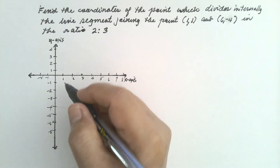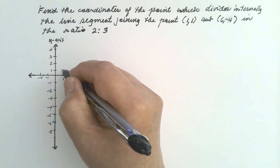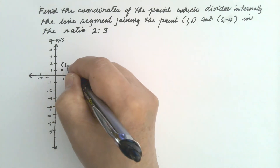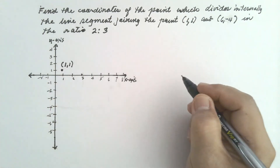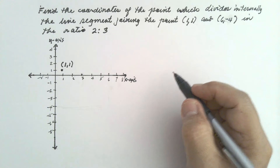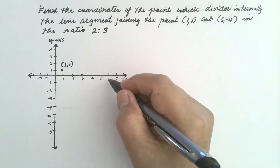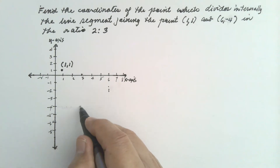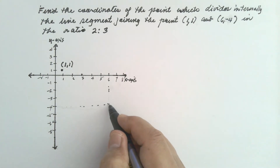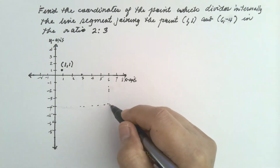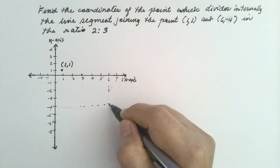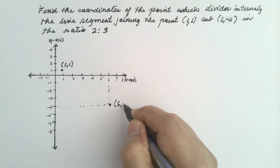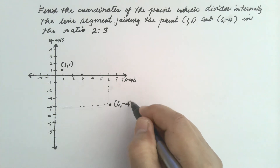This is point (1, 1). And then point (6, -4).